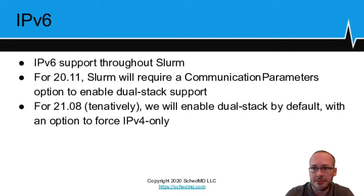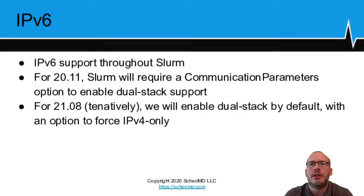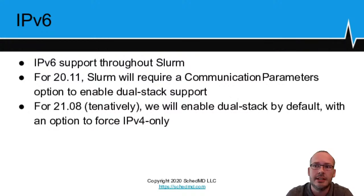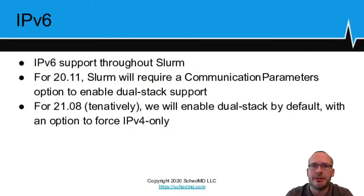IPv6 — Slurm REST daemon today supports IPv6, but we're going to extend IPv6 support to Slurm as a whole. For the 20.11 release, we'll require you to specifically turn on dual-stack support through a communication parameter we'll be adding. We're rolling this out slowly because we expect at least some sites will run into problems in a dual-stack environment, especially around DNS misconfigurations on the v6 side. Longer term, we expect to change it so Slurm will run dual-stack by default — potentially in 21.08 — with an option to explicitly force IPv4-only operation.